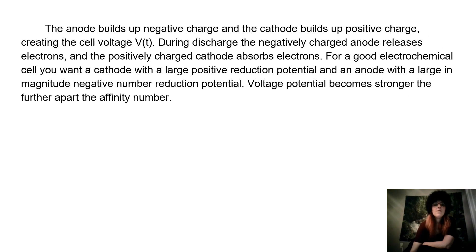The anode builds up negative charge and the cathode builds up positive charge, creating the cell voltage. During charge, the negatively charged anode releases electrons and the positively charged cathode absorbs electrons.